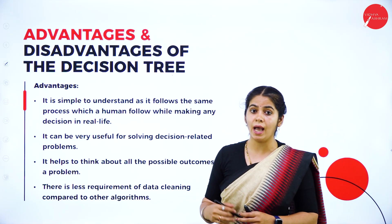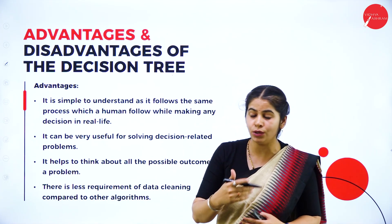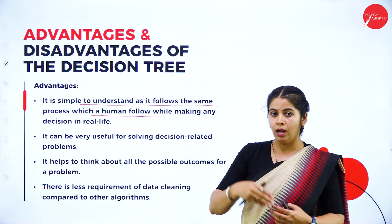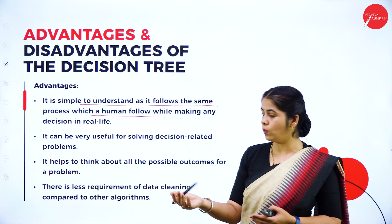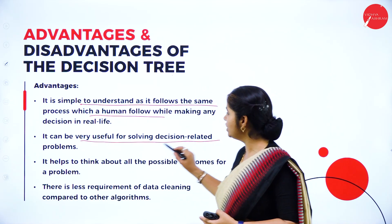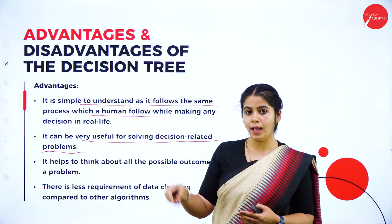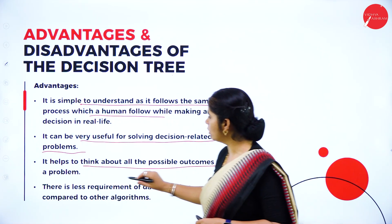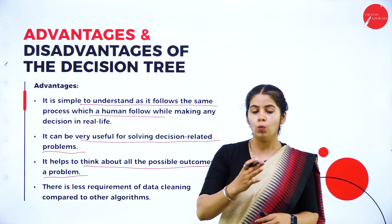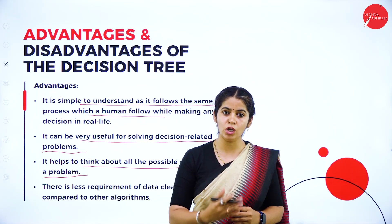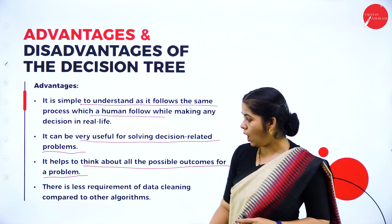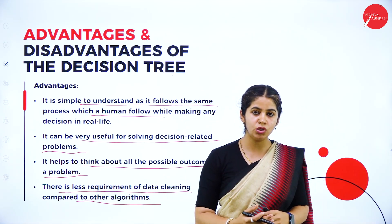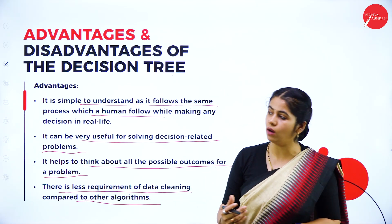Advantages of the decision tree: we can represent it in a very simple manner; it is easy to understand and follows the same process as human thinking — using probability, and if that is not working, moving to the next. It can be useful for solving decision-related problems by going through all the attributes. It helps think about all possible outcomes of the problem, and depending on our scenario we can choose any one. There is also less requirement for data cleaning compared to other algorithms.